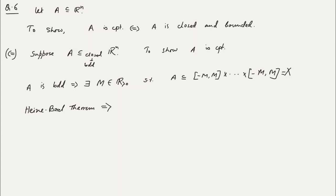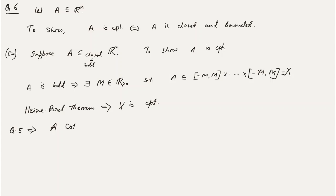Heine-Borel theorem implies X is compact. Now, by question number 5, this implies A is compact. So the forward direction — closed and bounded implies compact — is established. The reverse direction, by Heine-Borel, is very easy.